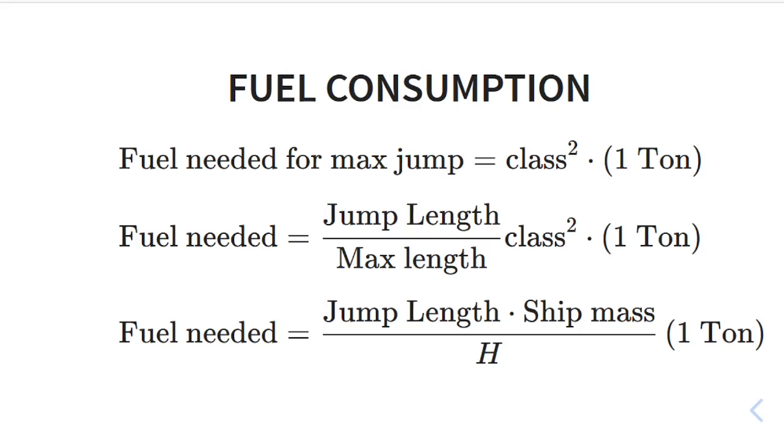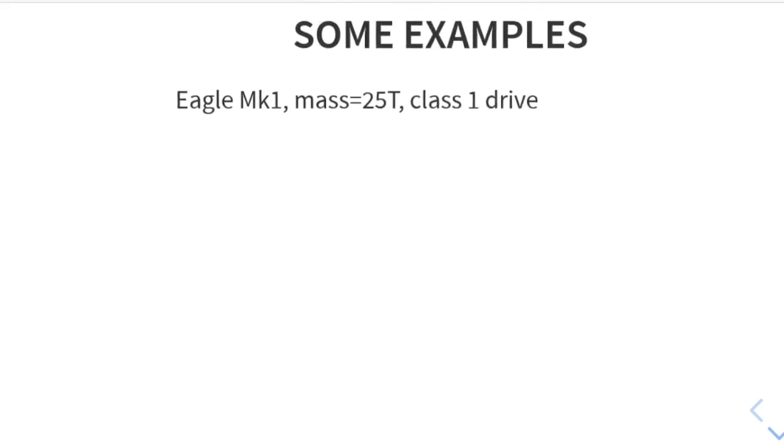And on a final formula, which almost never matters, you can substitute in the formula for maximum length. And what you get is a formula for fuel needed that doesn't depend on class. You see, there's no class in here. No class. So yeah, all that tells you is fuel consumption is independent of class. Having a bigger drive might make a jump possible, but if it was possible before, it'll still take the same amount of fuel, although it will be faster.